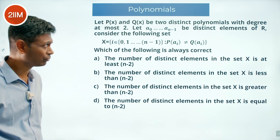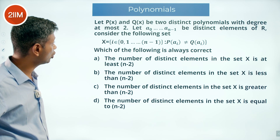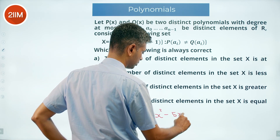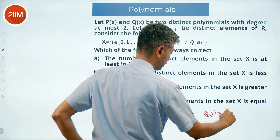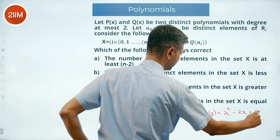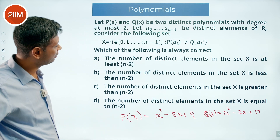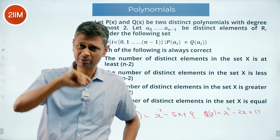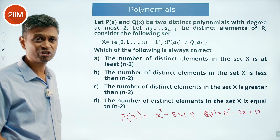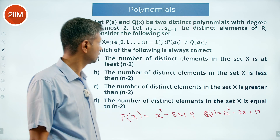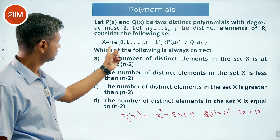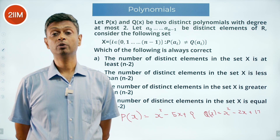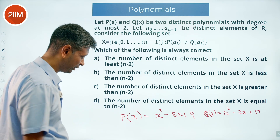At first I didn't understand this at all. For example, I could say P(x) = x² - 5x + 9 and Q(x) = x² - 2x + 17. And a₀, a₁, a₂, ..., aₙ₋₁ are distinct elements of ℝ. The set X is defined as the set of indices i from 0 to n-1 such that P(aᵢ) ≠ Q(aᵢ).